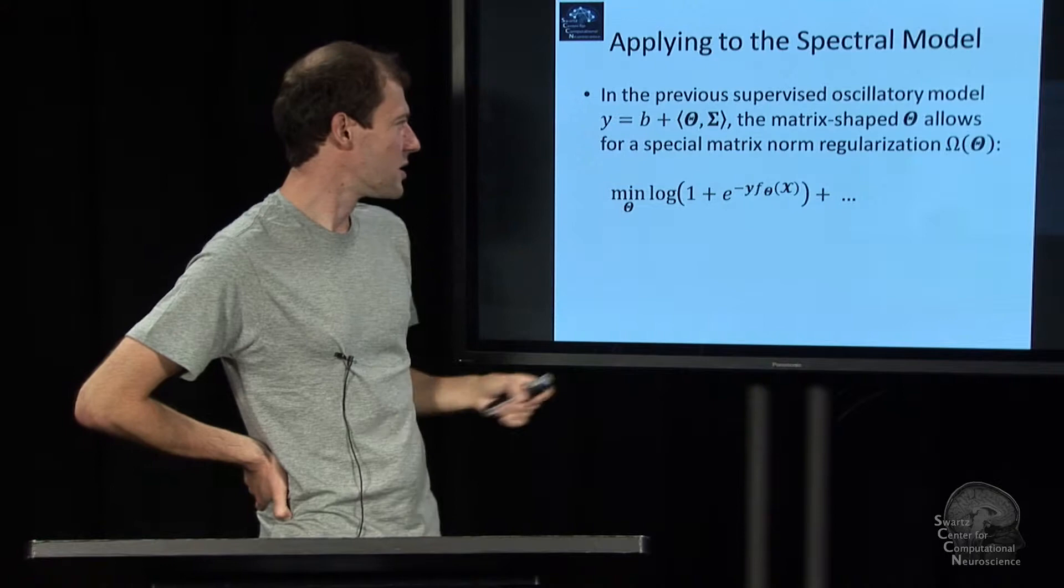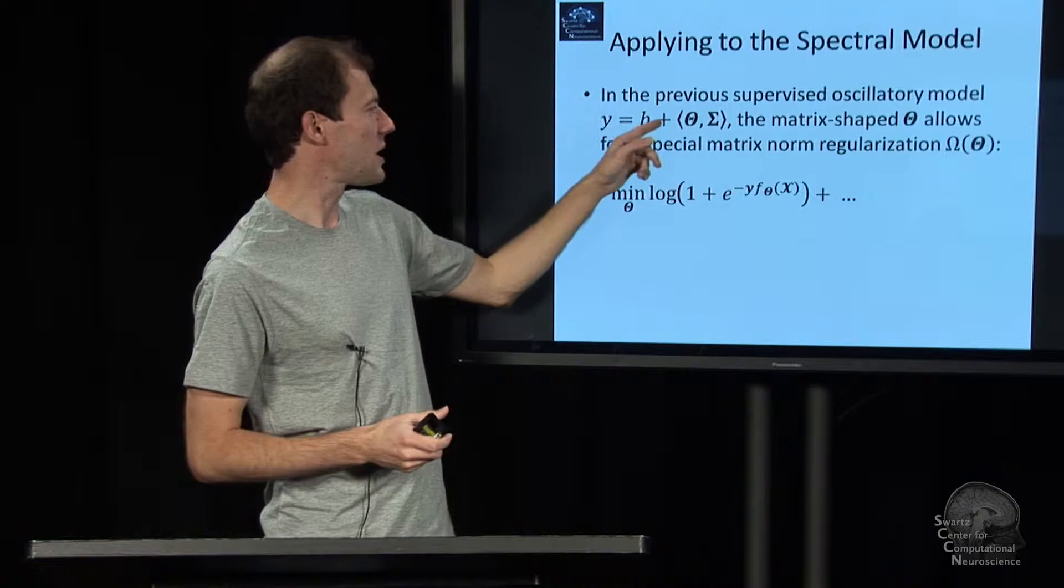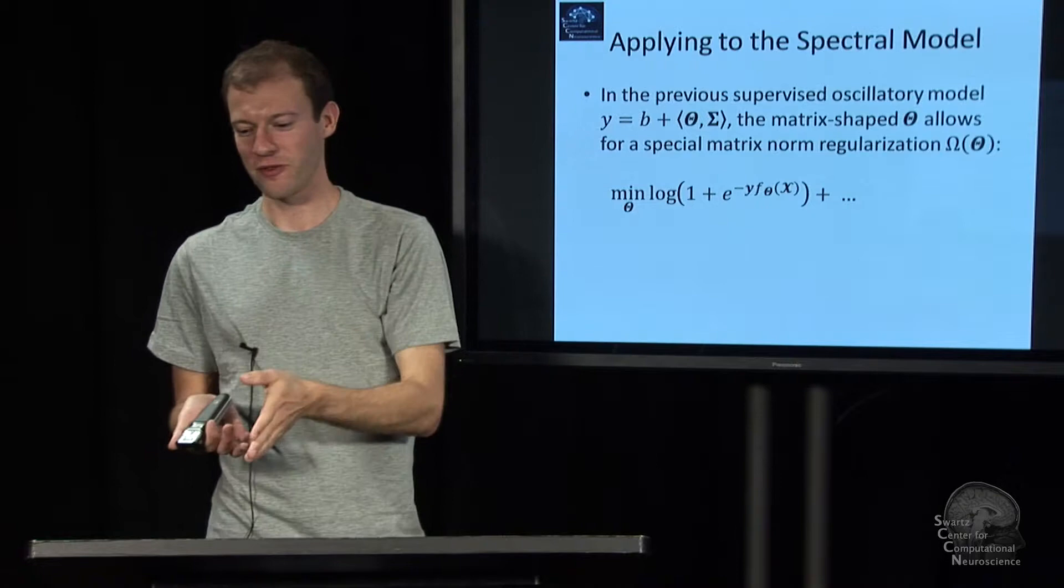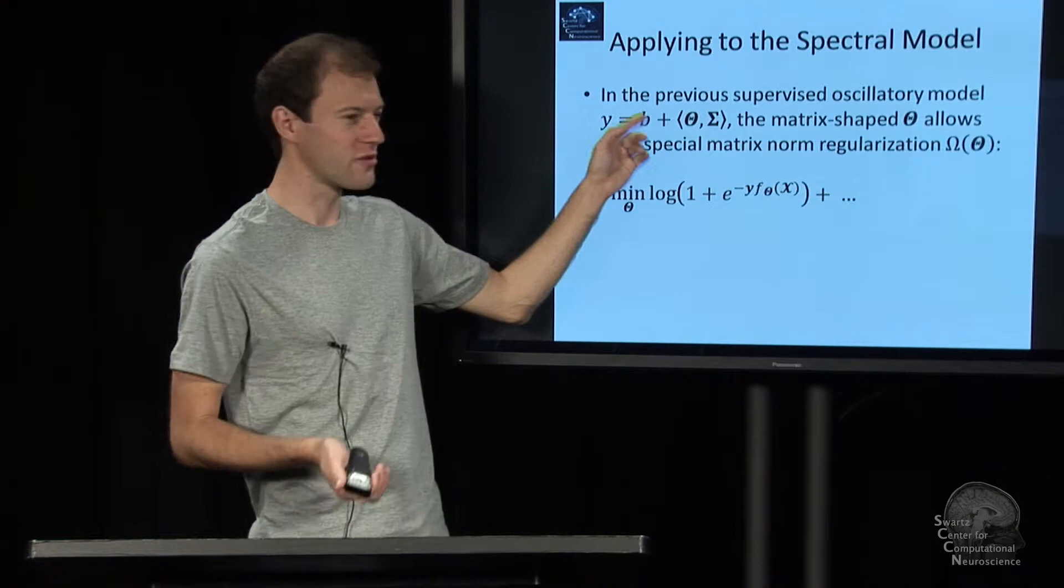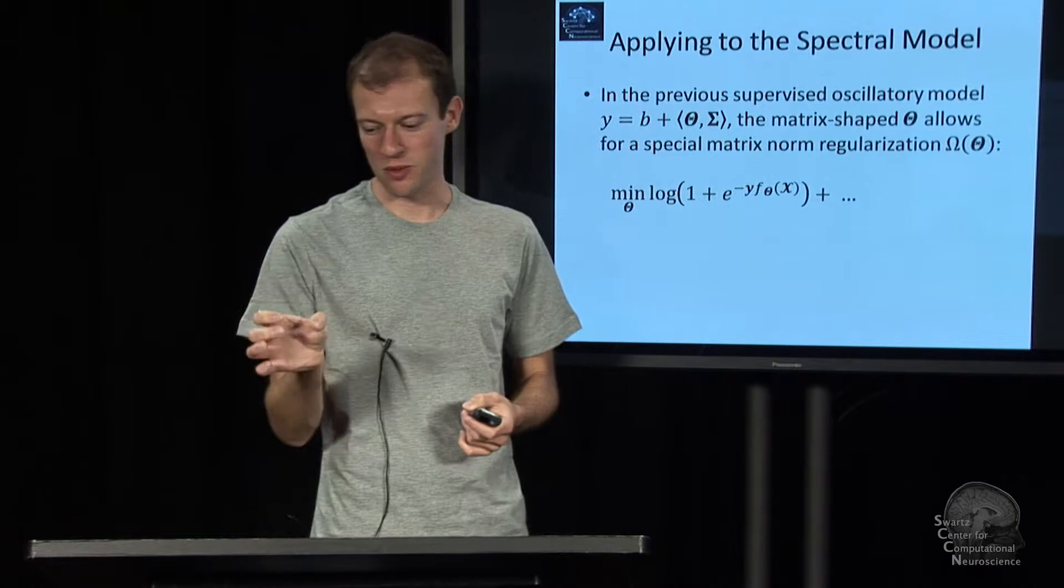You can basically merge this bias value into your parameter vector just by saying this is 1 plus data times theta, or 1 times b plus data times theta. You can always append a 1 at the end of your data and say my parameter vector is one more element. That's going to be effectively the slot for the bias value. So that's just a notation of convenience so you don't have to drag this b around all the time. But it can be practical to keep it separate if you don't want to apply certain kinds of penalties to the b that you want to apply to the other parameters.